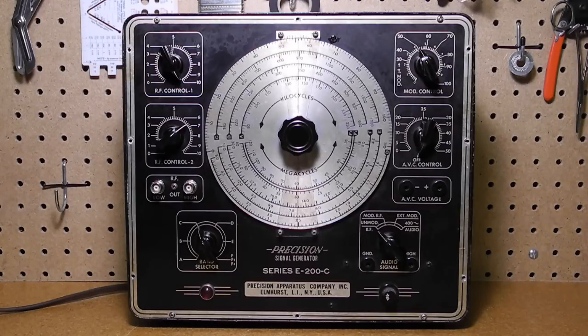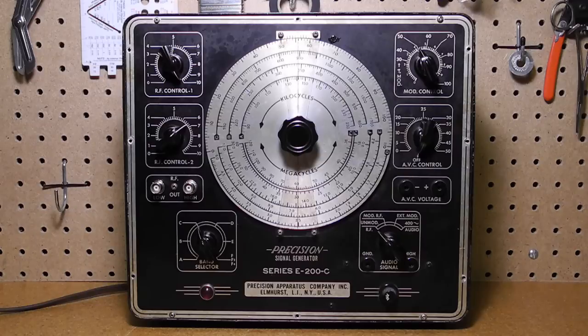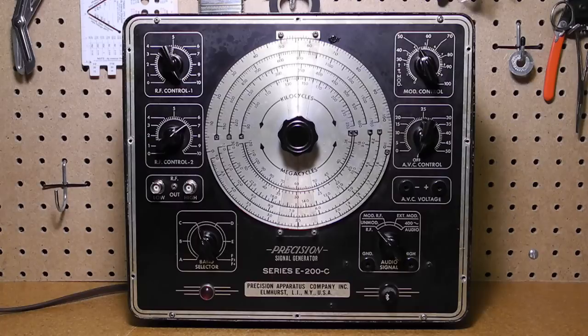There are low and high level outputs with controls for adjusting the output level. The level is not calibrated. On my unit, the high level is about 1 volt peak to peak and the low level is about 0.2 volts peak to peak with the output level control set to maximum into an open circuit.